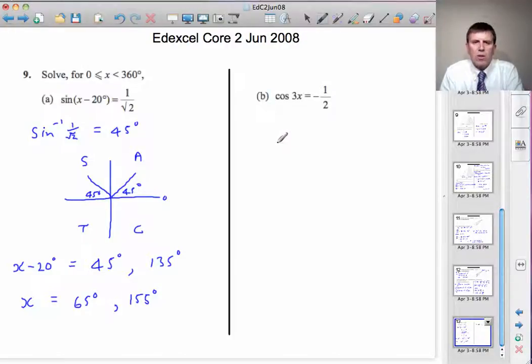Part B. Solve cos 3x equals minus a half. Now, we want x between 0 and 360. But if x is going to go between 0 and 360, 3x will go between 0 and 3 times 360, which will be 1080 degrees. So, we'll have to look three times around the CAST diagram to make sure we find all the answers.